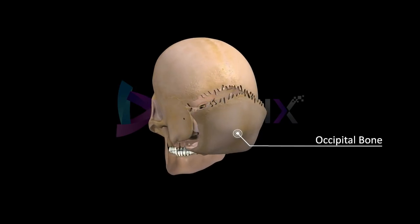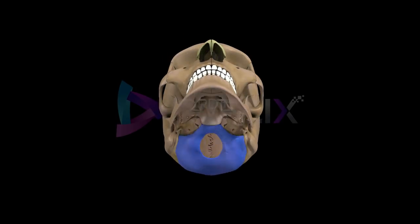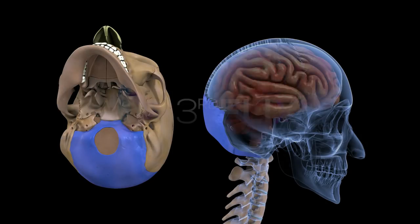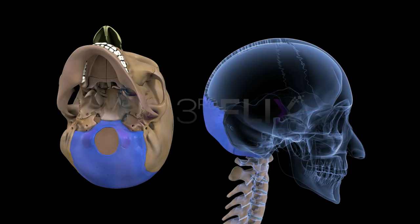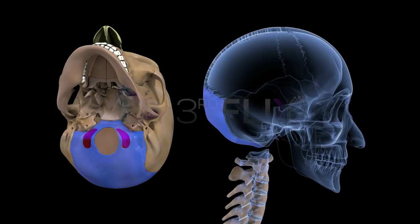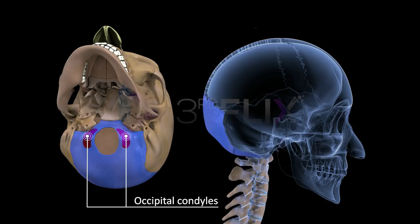The occipital bone forms the posterior part and most of the base of the cranium. It has a large opening called the foramen magnum, for the passage of the medulla oblongata. There are two protuberances from the occipital bone, on either side of the foramen magnum, known as the occipital condyles. They articulate with the atlas, that is the first vertebra. As two occipital condyles are present, the skull is referred to as a dicondylic skull.